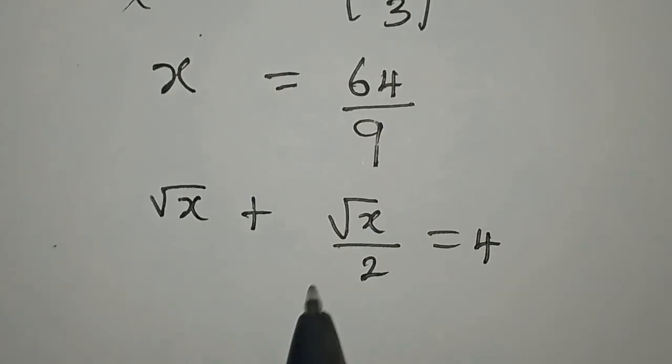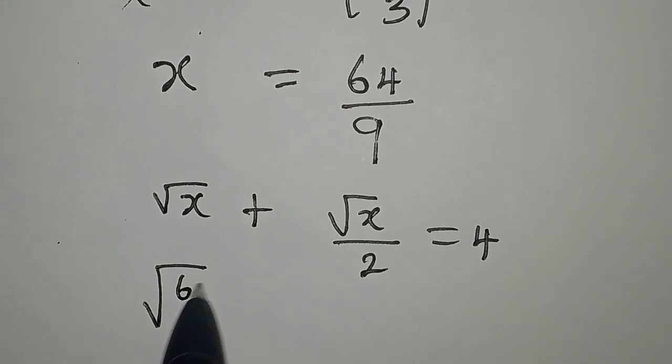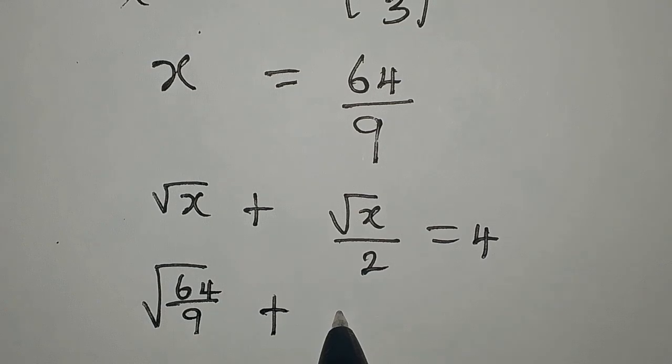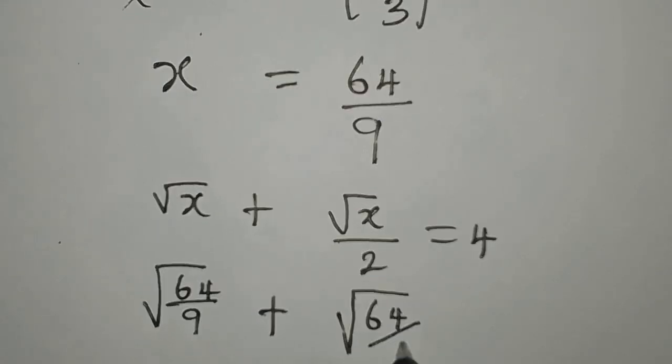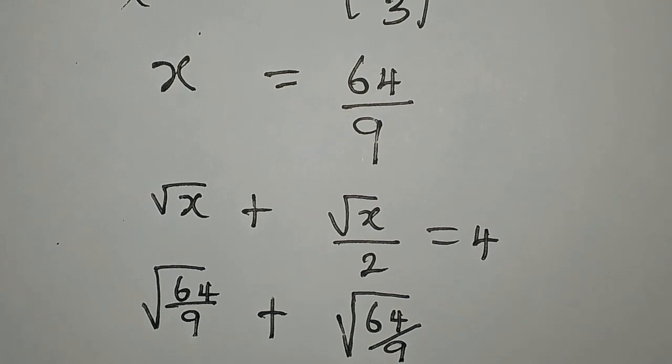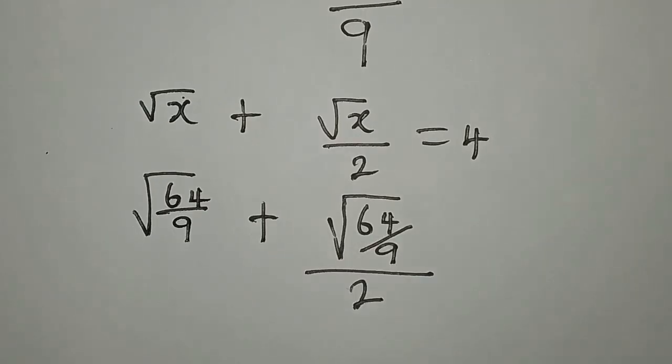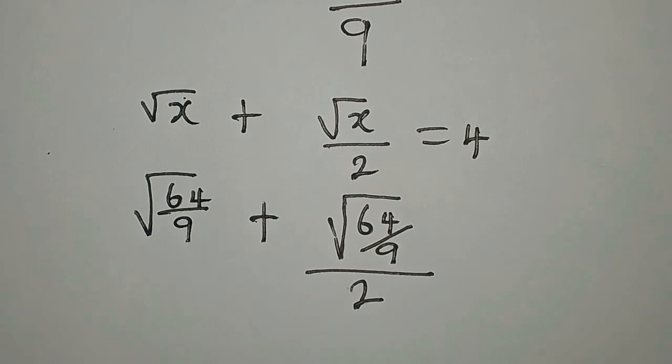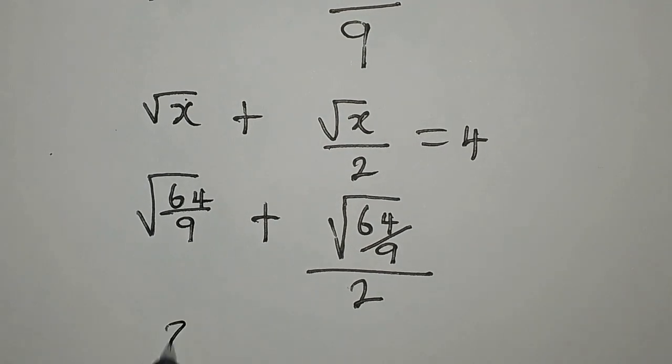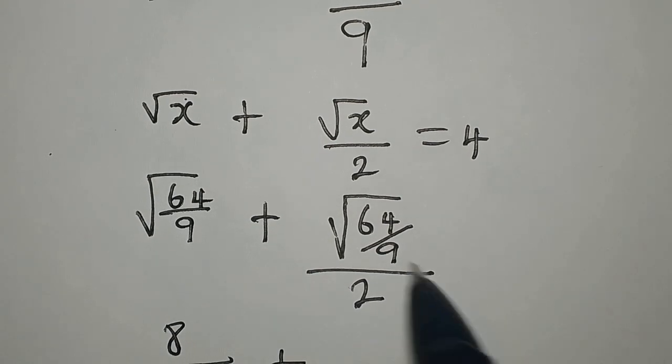Now let's put this value of x here. So we have √(64/9) plus √(64/9) all divided by 2. Now will this give us this 4? Let's continue.